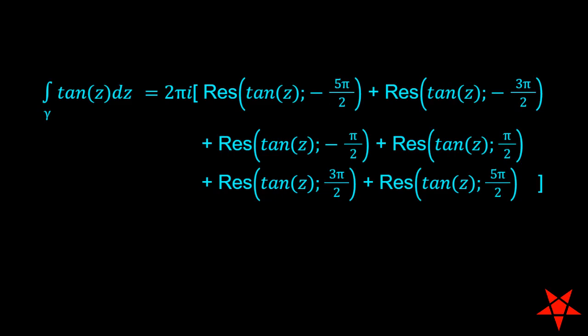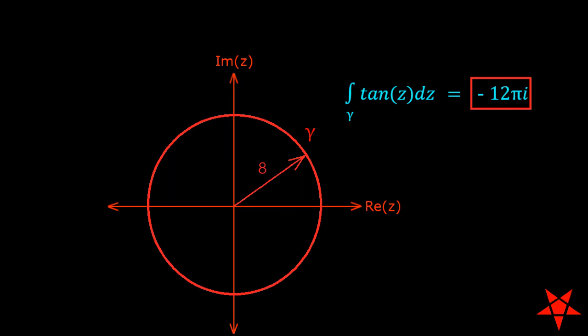Inserting these residues into our previous expression for the integral, we get 2πi times negative six, or -12πi for the integral of tangent of z about a closed loop along a circle of radius eight centered on the origin.